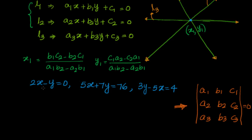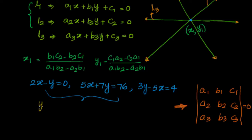We have taken a simple example. The equations of the lines are: 2x − y = 0, 5x + 7y = 76, and 3y − 5x = 4. First, without using the determinant form, I have to solve two equations and find their point of intersection. From the first equation, y = 2x, and I can substitute that into the second.